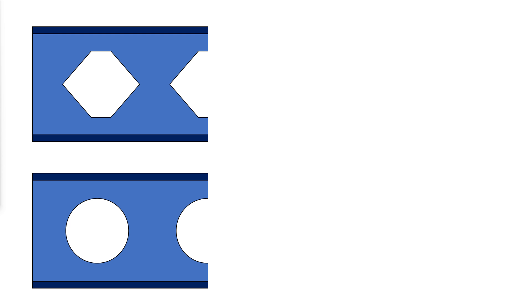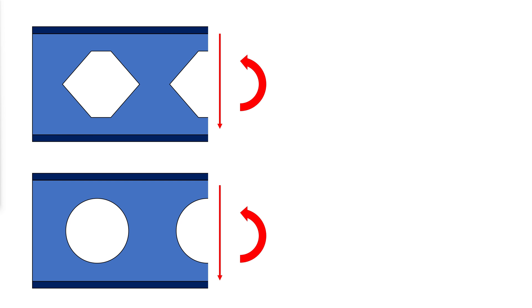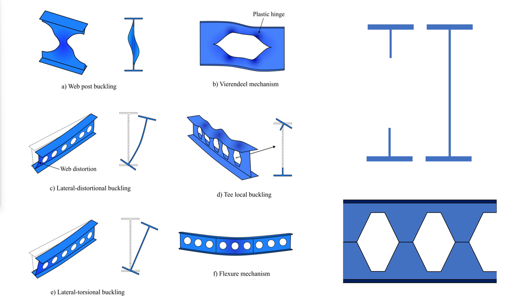In this video we will show how the stresses act in castellated and cellular beams due to global shear and bending moment. We will also show all the possible ways the section can fail due to bending and shear, and how to evaluate the strength for each failure mode.